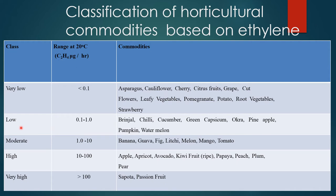In the case of low, the ethylene concentration ranges from 0.1 to 1 microgram per hour. Examples of commodities are brinjal, chili, cucumber, green capsicum and okra. Moderate concentration ranges from 1 to 10 microgram per hour. Commodities in this class include banana, guava, fig and lychee.